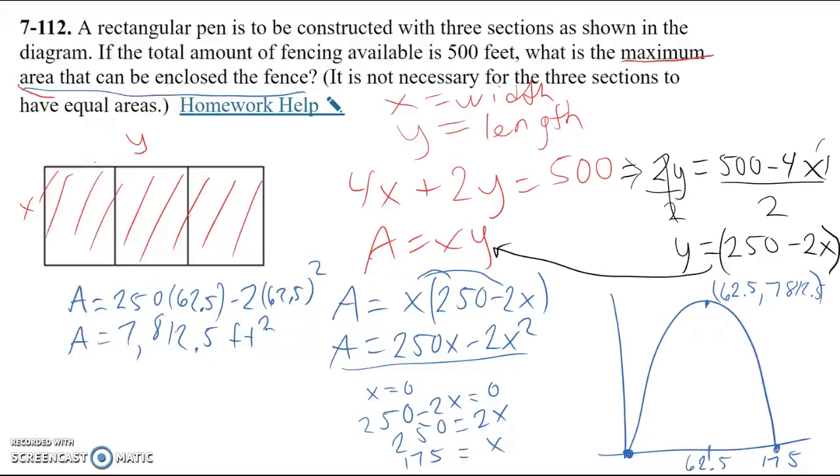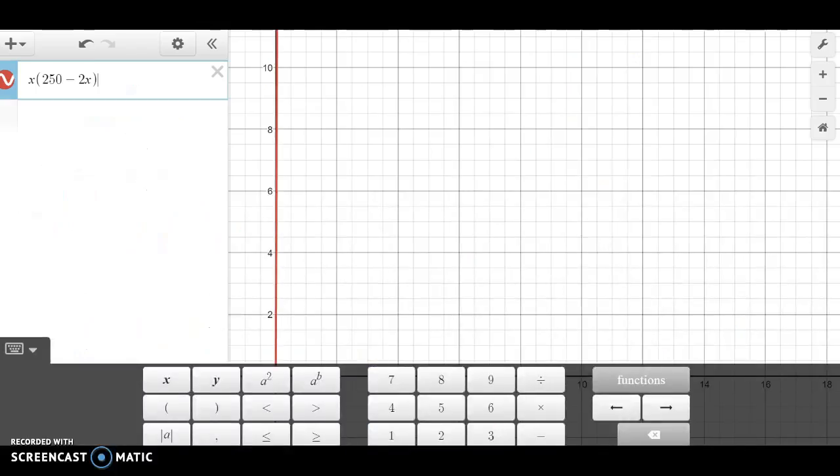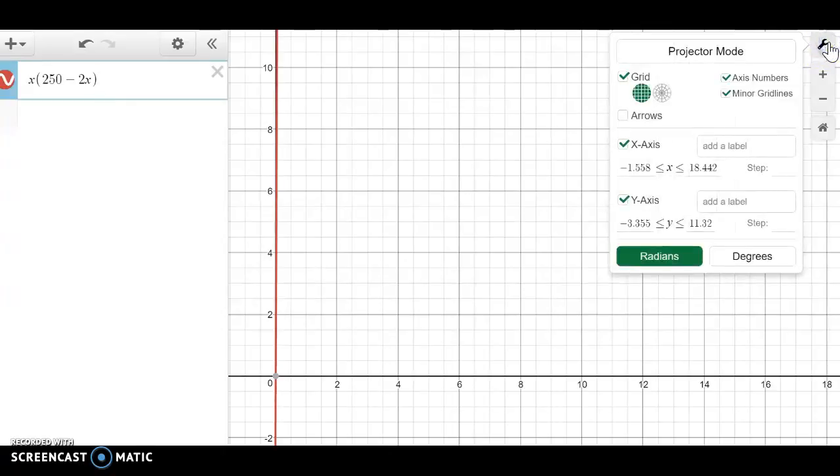Well, let's, this can be done with graphing. So let's take a look on Desmos, what that graph would look like. Okay, so when we put the function that we came up with into Desmos here, x times 250 minus 2x, now either format is good. Then we see a straight line again. So we need to adjust our domain and range so that we can see the maximum on here.